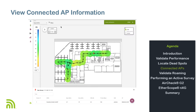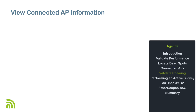For each data point, the AirMapper application records the access point to which it's connected. This information is useful in determining how the connected access point is performing as you move around the site. From a design perspective, this performance information may be used to adjust power levels for specific access points.